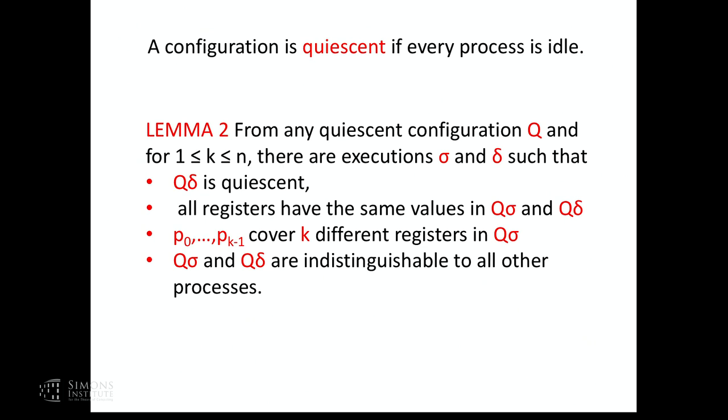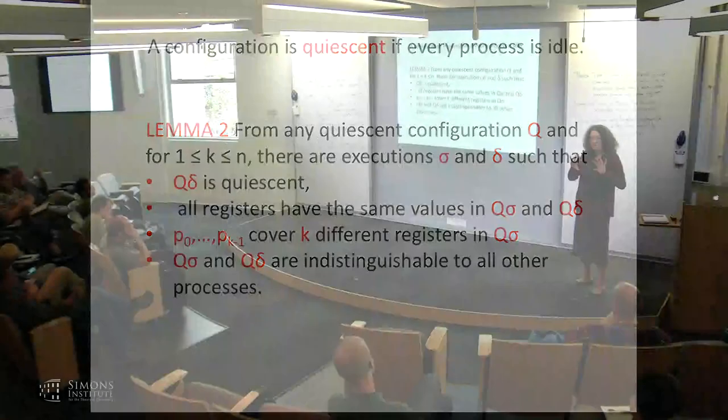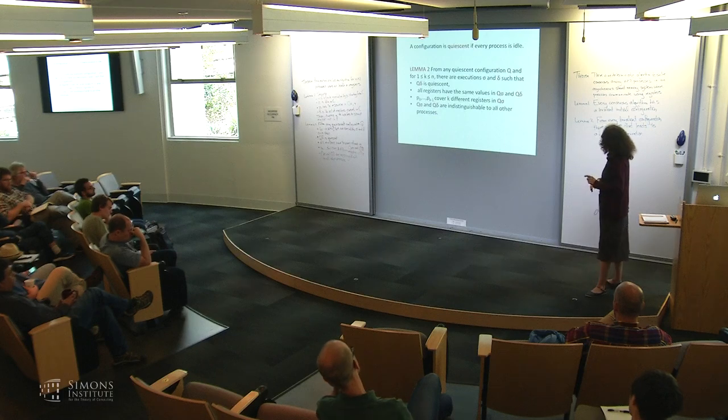The second lemma: first, a configuration is quiescent if every process is idle — the initial configuration is quiescent. Suppose we have a quiescent configuration Q. We can prove that from Q, for all K between 1 and N, there are executions sigma and delta such that starting in Q and performing delta, we end up at a quiescent configuration again.